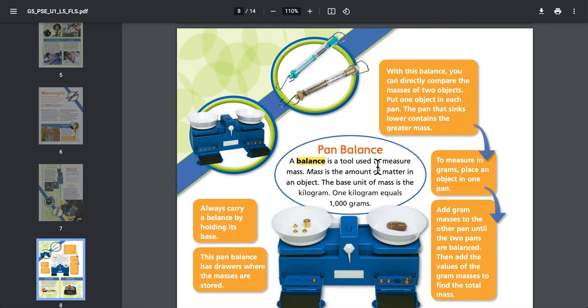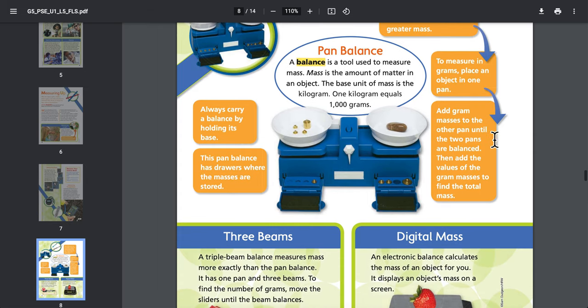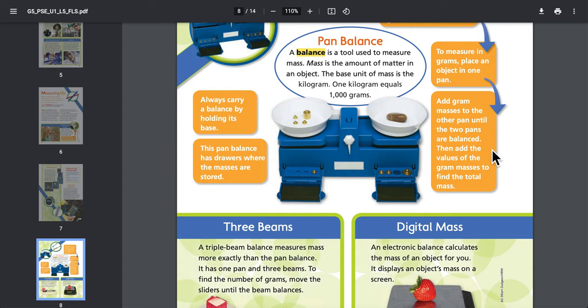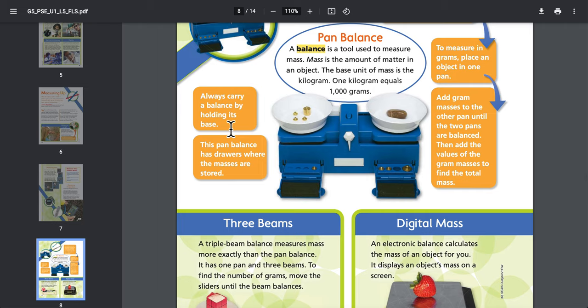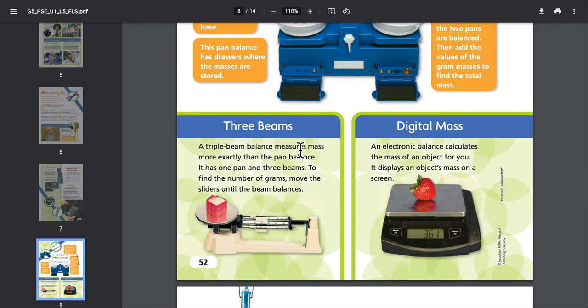Pan balance: A balance is a tool used to measure mass. Mass is the amount of matter in an object. The base unit of mass is the kilogram. One kilogram equals one thousand grams. With this balance, you can directly compare the masses of two objects. Put one object in each pan. The pan that sinks lower contains the greater mass. To measure in grams, place an object in one pan, add gram masses to the other pan until the two pans are balanced, then add the values of the gram masses to find the total mass. Triple beam: A triple beam balance measures mass more exactly than the pan balance. It has one pan and three beams. To find the number of grams, move the sliders until the beam balances. Digital mass: An electronic balance calculates the mass of an object for you. It displays an object's mass on a screen.